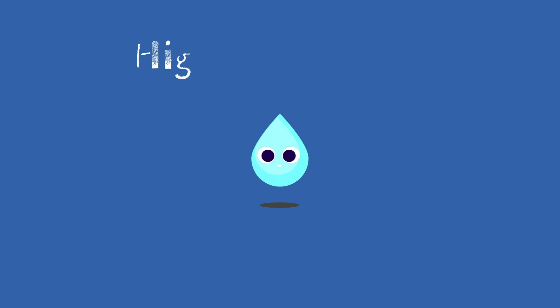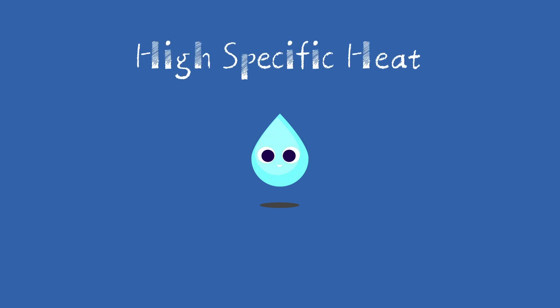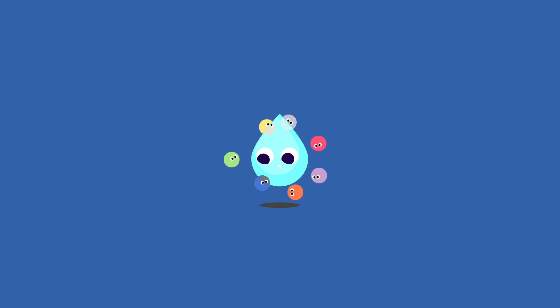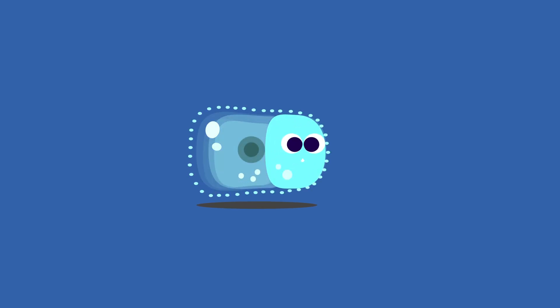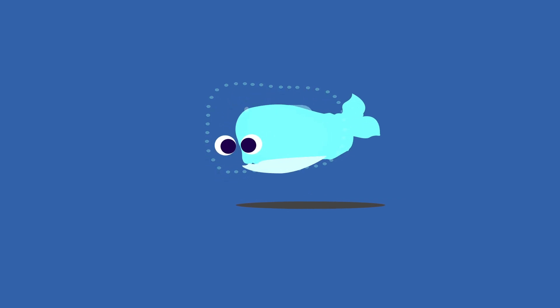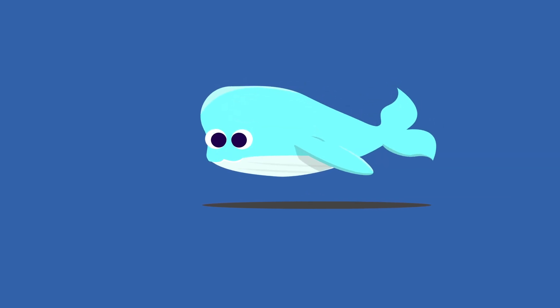A large percentage of our body is made up of water. Due to the high specific heat of water, living things are able to maintain a steady body temperature. Another important characteristic of water is its ability to dissolve things. Water is able to dissolve almost anything thanks to this unique property, creating an environment in which all the substances needed for life can exist, evolve, and be dissolved.